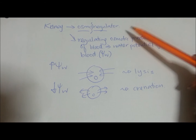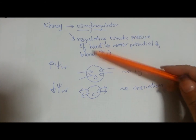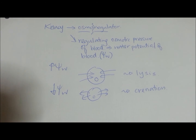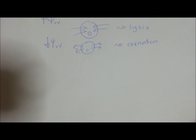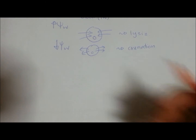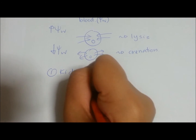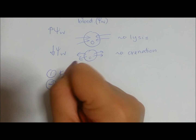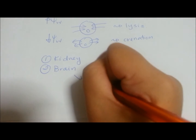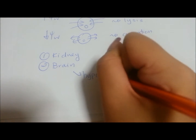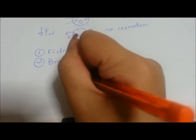So, how does the kidney regulate the osmotic pressure in our blood? Several partners are involved in osmoregulation. Of course, the first will be your kidney. Secondly, the brain — specifically, which part of the brain? The hypothalamus. And also the pituitary gland.